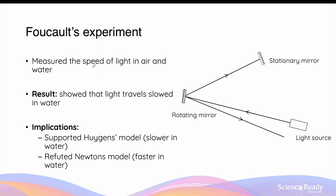In Foucault's experiment, he measured the speed of light traveling in air and water. He did this by using a light source projected through a rotating mirror, which reflected the light to a stationary mirror and back to the rotating mirror. By calculating the angle elapsed due to the mirror's rotation between the incident and returning ray, Foucault calculated the speed of light in both air and water. This supported Huygens' model, which predicted light travels slower in water, while refuting Newton's corpuscular model, which predicted light corpuscles would travel faster in water due to stronger attraction from water molecules.